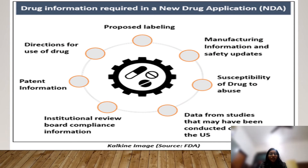The drug information required in a new drug application includes proposed labeling, manufacturing information, safety updates, susceptibility of the drug to abuse, data from studies conducted outside the US, institutional review board compliance information, patent information, and directions for use of the drug.